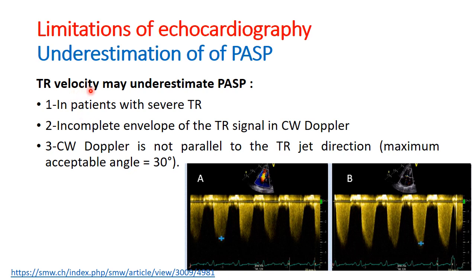Tricuspid regurgitation velocity may underestimate pulmonary artery systolic pressure in patients with severe tricuspid regurgitation, in case of incomplete envelope of tricuspid regurgitation velocity in continuous wave Doppler, or if the continuous wave Doppler is not parallel to the tricuspid regurgitation jet direction.